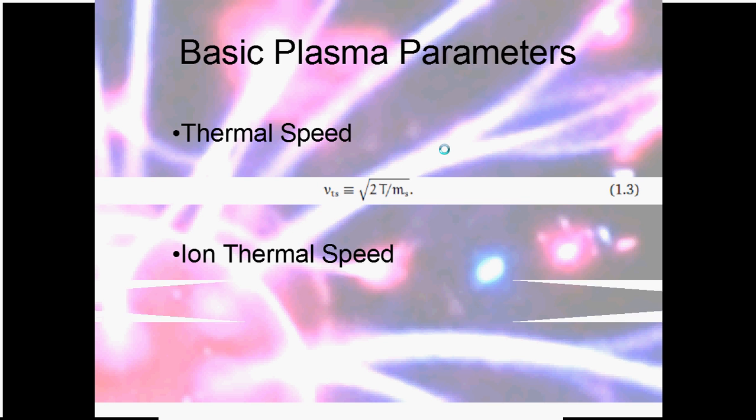The ion thermal speed is then often determined by the temperature difference. But for the moment, let's assume that the temperature of both the ions and the electrons are the same in this particular plasma. It's a thermal plasma. Then we can define the thermal speed of the ions as the ratio of the square root of the mass of the ion and the electron times the electron thermal speed.